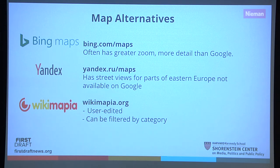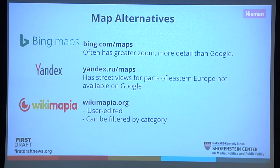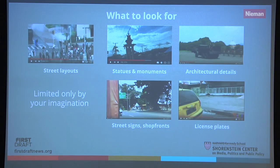There are lots of other websites for map searches beyond Google. Yandex is better than Google for Russia. Wikimapia is user-edited — you can filter by category like restaurant or library — but since it's user-edited, treat it as a lead rather than a verified piece of information.